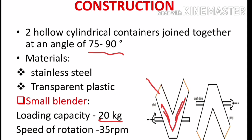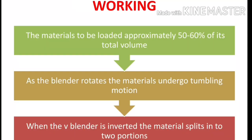There are two types of blenders available — small and large. Small blenders have a loading capacity of about 20 kilograms and rotate at about 35 rpm. Larger blenders have a loading capacity of about 1 ton and rotate at 15 rpm. The material is loaded through either of the shell hatches, and the sample can be emptied through the apex port.